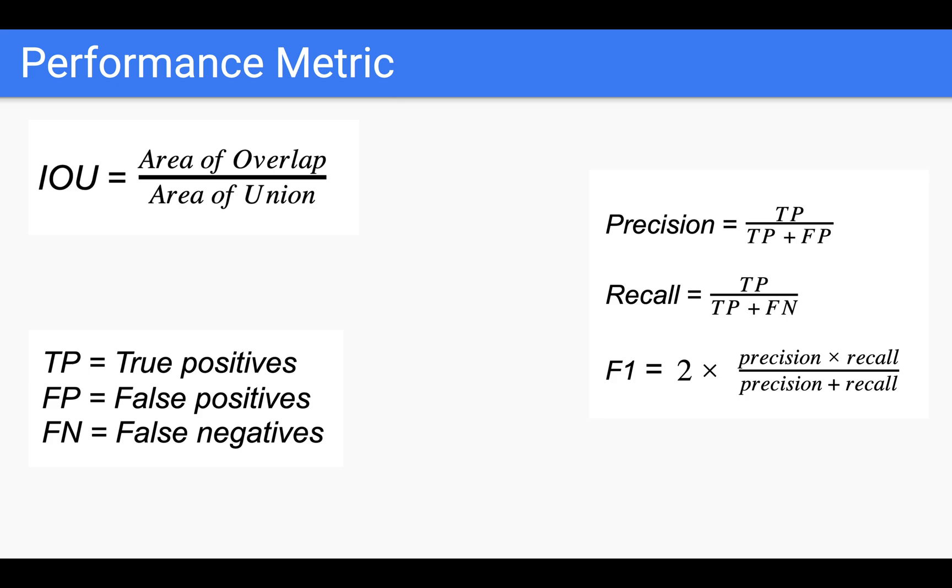Likewise, recall is also a measurement of accuracy, but you're penalized for missing traffic signs that you should have detected, or should have been detected by the model. And then precision and recall is combined together to produce one F1 score, which is normalized to 0 to 1, where 1 is a perfect score and 0 is the worst possible score.